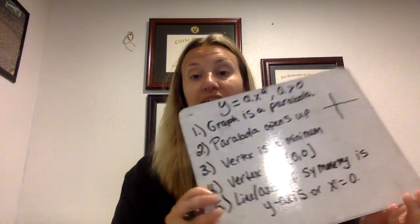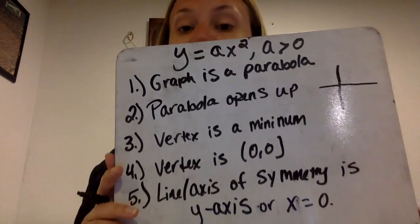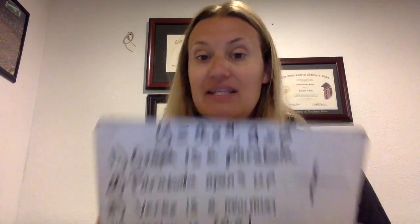These are the generic equations, similar to how lines were y equals mx plus b — if m was positive, you had a line going up; if m was negative, you had a line going down, but it was always a line. Now we're going to get more specific and focus on just y equals ax squared. If a is greater than zero — meaning a is a positive number — such as y equals x squared, y equals 2x squared, y equals 3x squared, or y equals 5-halves x squared — if a is a positive number, here are five characteristics we know about the graph just from the equation.